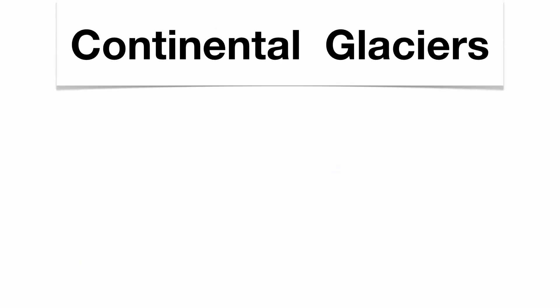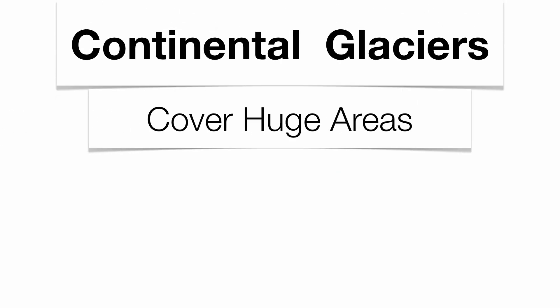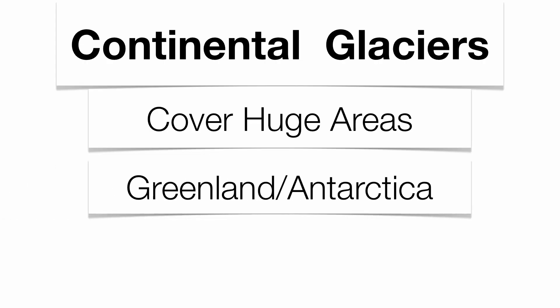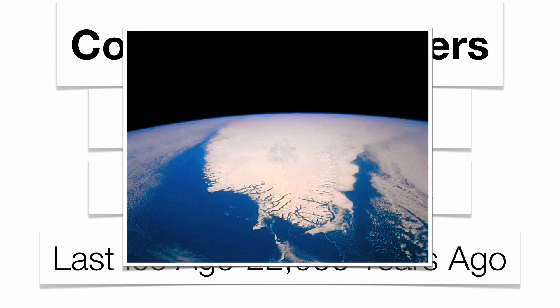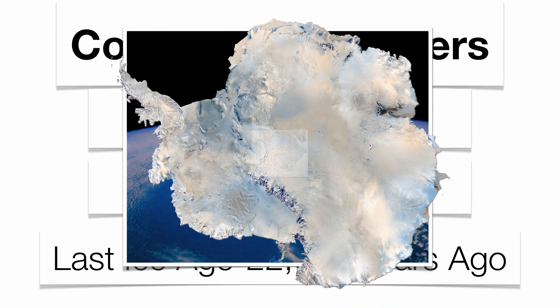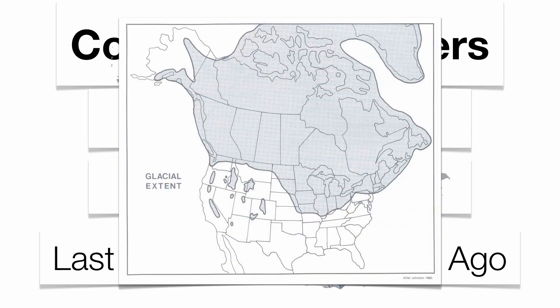The second type is what we call a continental glacier. This is when full continents are covered by ice and snow — Antarctica and Greenland are the two examples. We also had one over top of New York State 22,000 years ago during the last ice age. There's Greenland, there's Antarctica, and there's a diagram of what the continental ice sheet, called the Laurentide Ice Sheet, might have looked like over top of North America 22,000 years ago. Notice that New York State is completely covered.